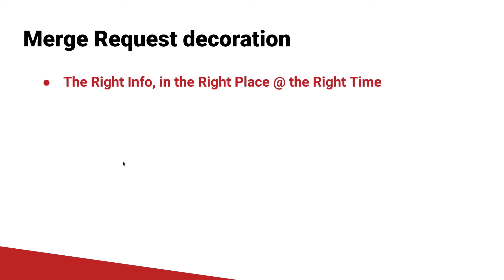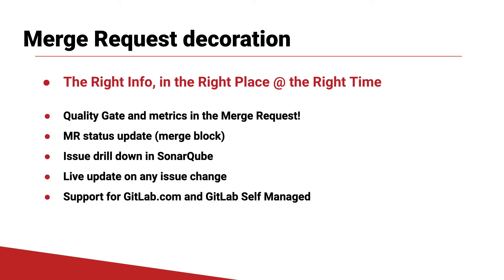So for GitLab, you can see that we bring a consistent, valuable feature set with every merge request. That starts with the right information at the right place at the right time. We give you quality gate status as well as metrics right in your merge request. You can also see that we're able to block a merge when we have that red quality gate, drill down into the issue right into SonarCube, and when we made a change to that issue status, it live updated right back to GitLab. We have support for GitLab.com as well as GitLab Self-Managed.